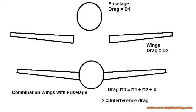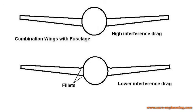If you measure the drag of a fuselage by itself and the wing drag by itself, it is less than what you would measure when you combine wings and fuselage. The difference is the interference drag. Anytime there is a corner where two components are joined, the airflow around one affects the airflow around the other. The interference drag can be a few percent of the component drag. It cannot be eliminated completely, but it can be reduced by shaping the junction appropriately.